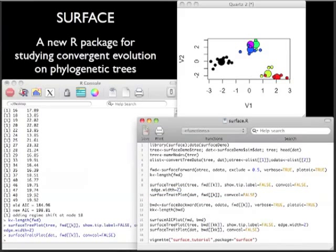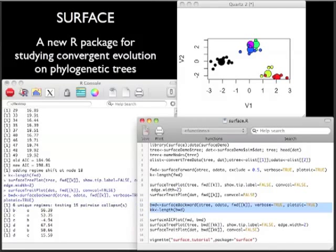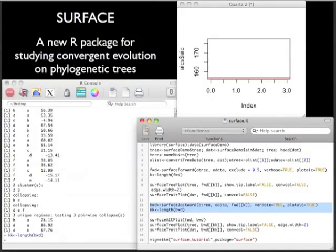Now we start the backward phase of SURFACE to see which pairs of regimes can be collapsed together to improve the model. This step can also be very slow if there are many regimes to check, but it's quite quick in this case. SURFACE finds two groups of regimes, a pair and a group of three, that can be collapsed into two convergent regimes. In this case, none of the collapses conflicts with one another, so they can all be accomplished in a single step.